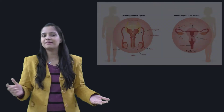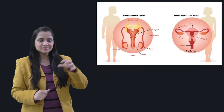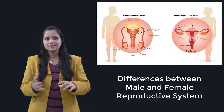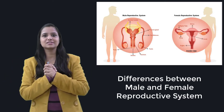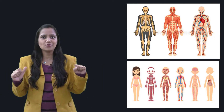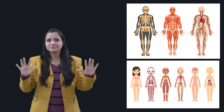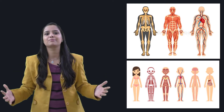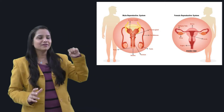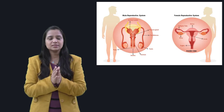In the last video I discussed the similarities between the male and female reproductive system. Continuing the same topic, today I will be discussing the differences between the male and female reproductive system. The differences are largely based on the structure, location, and function of each individual's role in the reproduction cycle. Welcome back, and let's start the session.